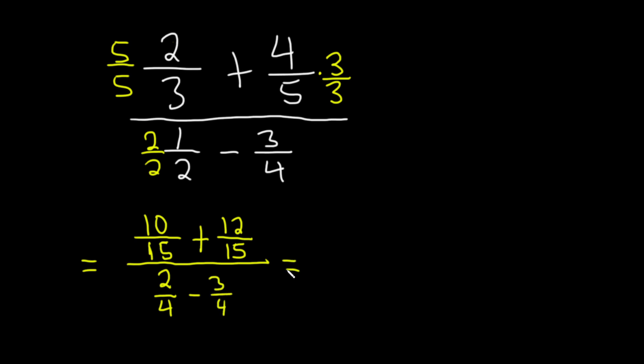So this is equal to 10 plus 12 is 22, so you have 22 over 15. This is all one term. Divided by two minus three is negative one, so this is negative one-fourth.